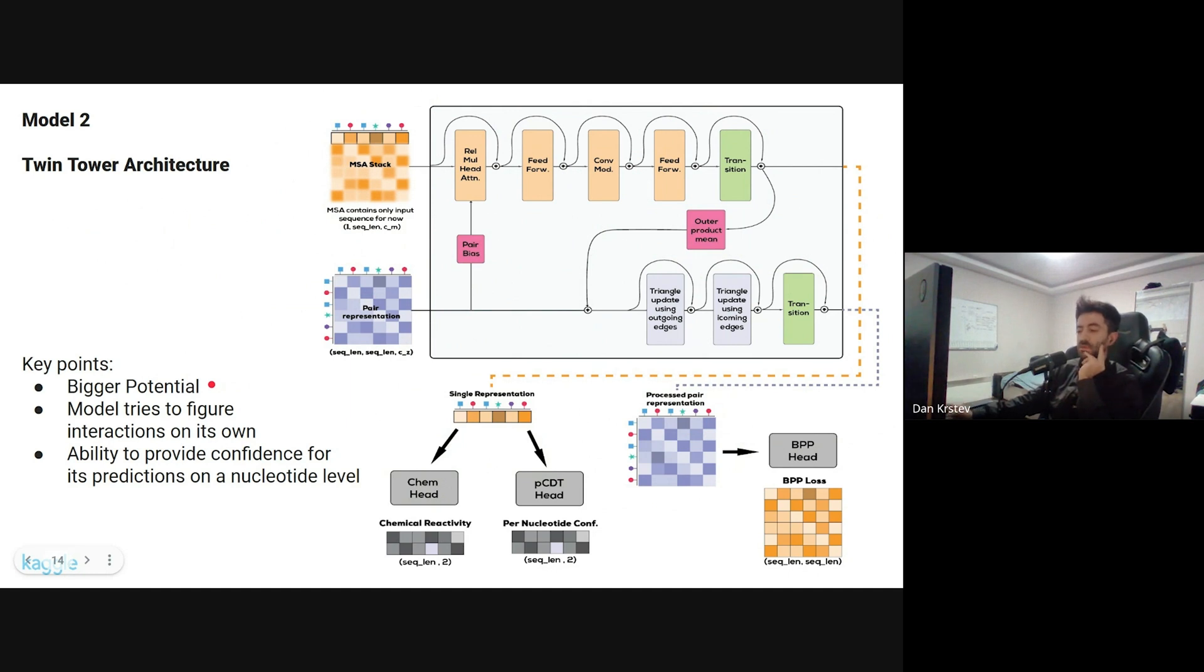Some of the key points that I like about this model is it has bigger potential than the Squeezeformer architecture I used for the submission. The model tried to figure the interactions on its own, so there were no additional inputs. There was no base pair probability matrices, there was no minimum free energy, nothing. It was just sequence as input, and as output we got the chemical reactivities. And it's nice that it has the ability to provide confidence for its predictions on a nucleotide level.